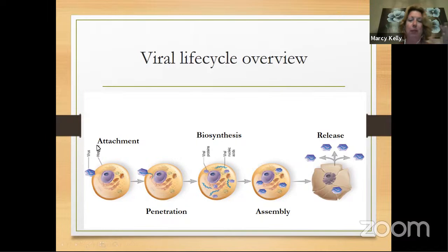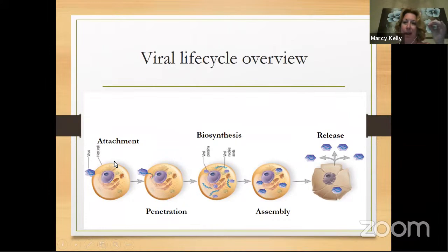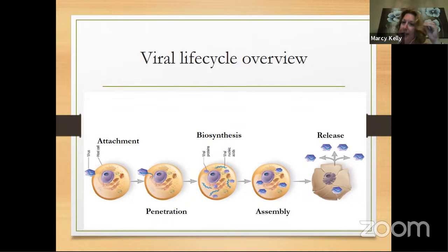In the case of SARS-CoV-2, the spike proteins are looking for a specific protein that exists on certain host cells in the human called ACE2. If the virus spike protein finds ACE2 on the host cell, they'll link together and the virus will get into the host cell. You can imagine the viral spike protein is like a key and the ACE2 receptor is like a lock — the virus sticks its key into the ACE2 receptor and then gets into the host cell. That's the process of attachment and penetration.